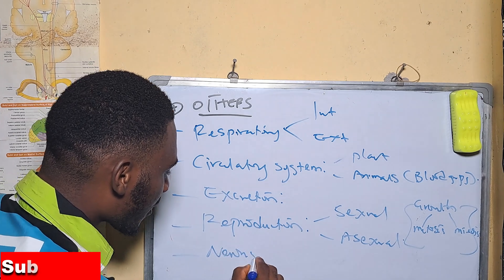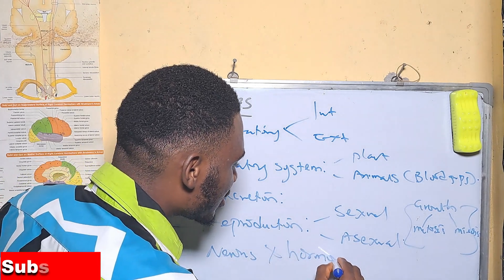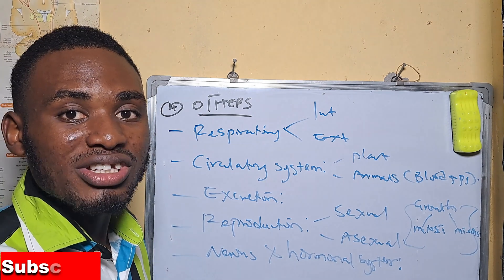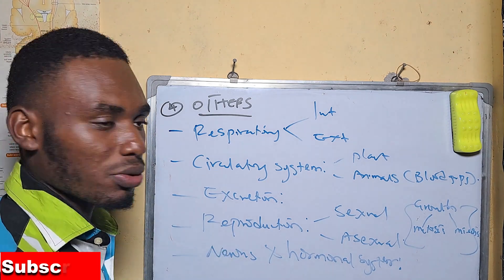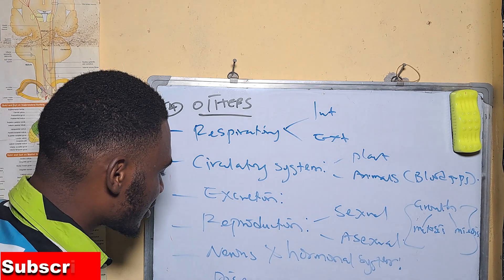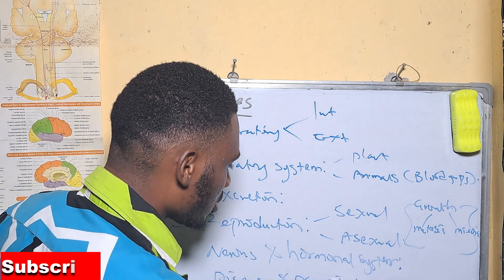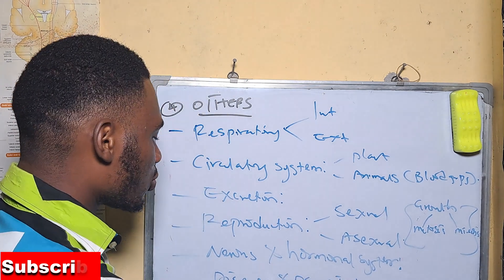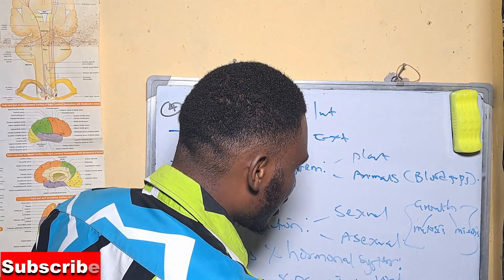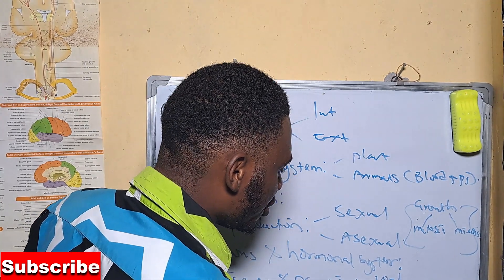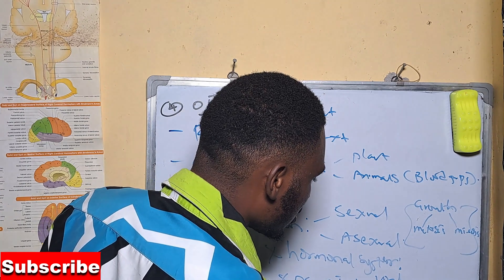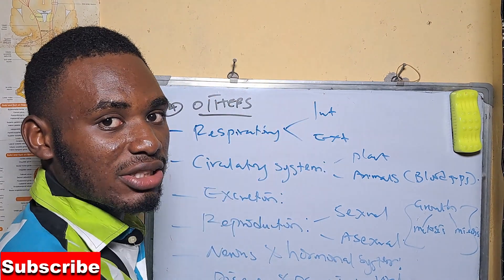We also have the nervous system and hormonal system — this covers our body hormones and our body's nervous control. We also have diseases and parasites, where we have to talk about viral infections, bacterial infections, and protozoan infections, and their causative agents.